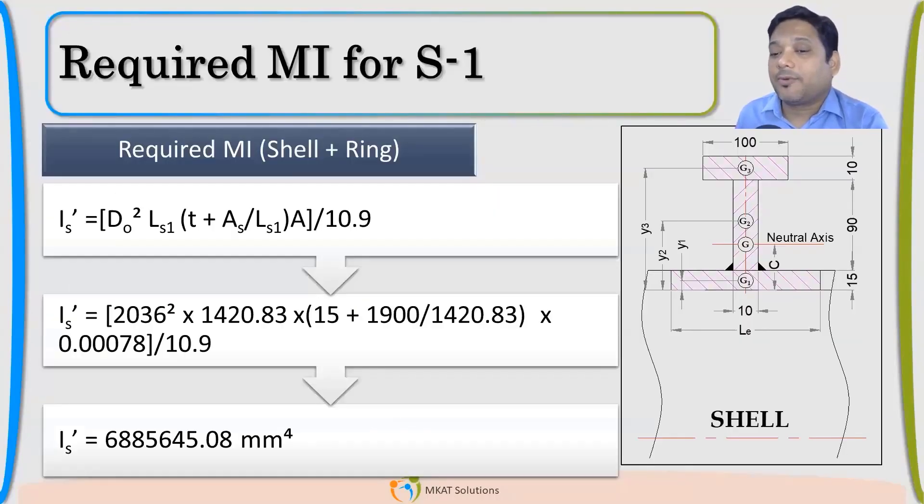Now IS value, we have already calculated all those values. D0 I have, I have LS1, T which is 15 mm, then 1900 which is AS divided by LS1. And for the first stiffener. 1420 multiplied with factor A divided by 10.9. Finally, I will get this IS value as 6885645 mm4. That is my required moment of inertia as per code. I hope you understood this topic.